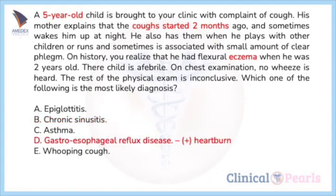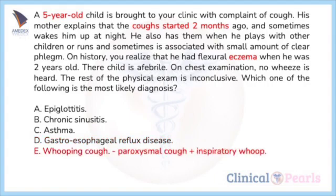Option D: gastroesophageal reflux is rare in this age group. If present, it may cause chronic cough and mimic cough-variant asthma especially at night, but not exertional cough. Moreover, absence of other features such as heartburn makes this diagnosis far less likely. Option E: whooping cough (pertussis) has a different presentation with paroxysms of cough and the terminal inspiratory whoop.